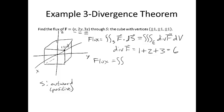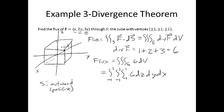So flux is going to be the triple integral of 6 over the solid region E bounded by S. You could write this as 6 dz dy dx, where z goes from −1 to 1, as does y, as does x. However, it might be faster to notice that this is 6 times the triple integral of 1 dV, or 6 times the volume of E. The length of each side is 2, so that's 6 × 2 × 2 × 2, or 48. And that's your final answer.